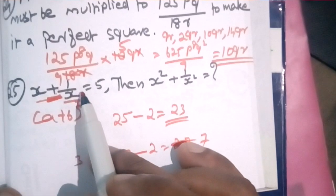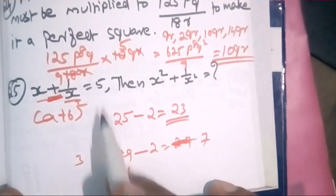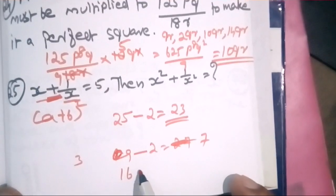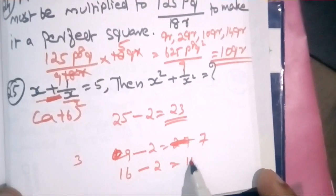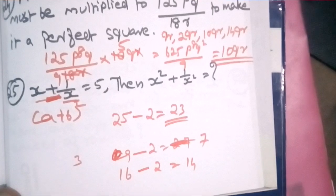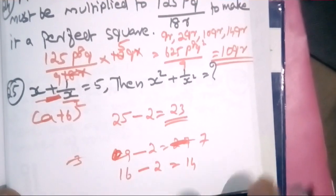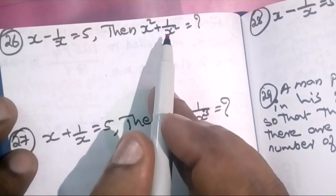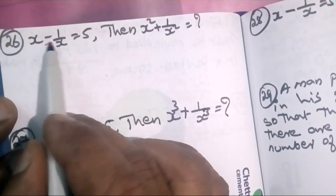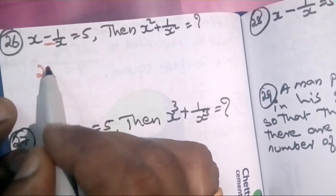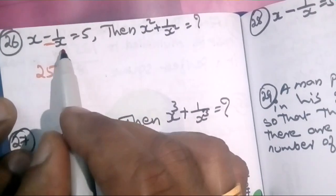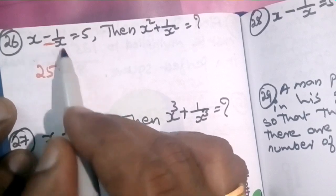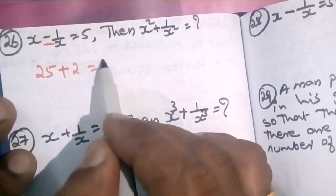We have 4 squared, 16 squared is 4 squared, we have 12 squared. Using x minus 1 by x squared: x squared plus 1 by x squared equals 25 minus 2 equals 23. Now if x plus 1 divided by x equals 5, we explore further using a plus b whole squared.